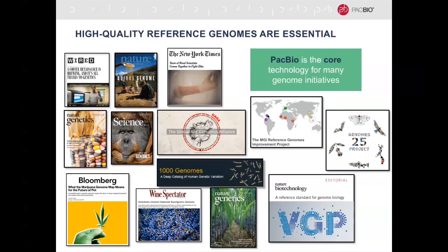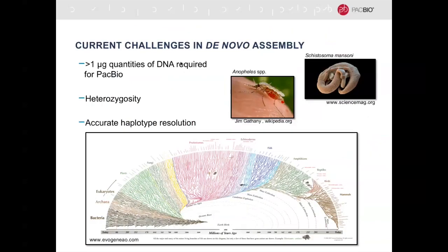Thanks, Maura. I'm assuming everybody can see my screen — let me know if there's an issue. Okay, great. Maura did a really great introduction. I don't think I need to convince anyone that high-quality reference genomes are essential tools for basic and applied research. PacBio has emerged as an important technology for genome projects for plant and animal species, and has been selected as the core technology for large genome initiatives like the Global Ant Genomics Alliance, the Sanger 25 Genomes Project, and the Vertebrate Genomes Project, among others.